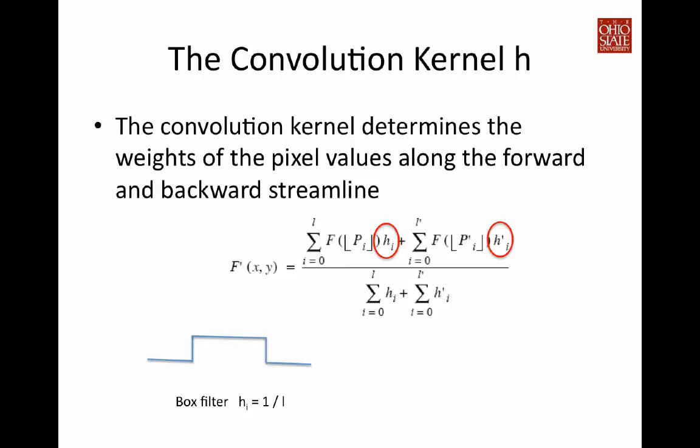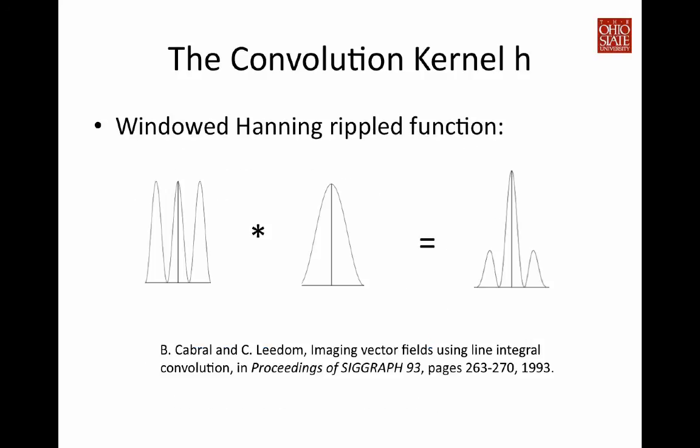Or you can highlight the value close to the originating pixel that you use to compute the streamlines. So you can use a filter. That is, if pixels are close to the starting position of the streamline, you assign higher weight. And when they are farther away, you assign lower weight. Another more sophisticated method is to use a periodical filter.